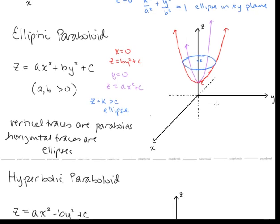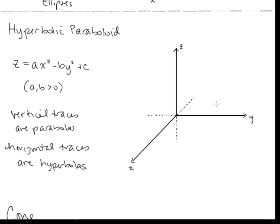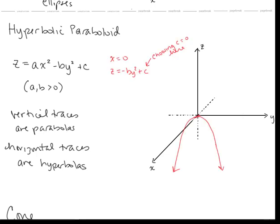Next is the hyperbolic paraboloid. As the name suggests, we're going to see parabolas and hyperbolas. When x equals 0, we're left with z equals negative by² plus c. With b positive, this is a downward-facing parabola. For simplicity I'm choosing c equals 0, so there's no shift. The parabola z equals negative by² is in the yz plane. When y equals 0, we have z equals ax² plus c with a positive, giving an upward-facing parabola in the xz plane, and with c equal to 0 here.